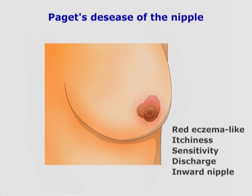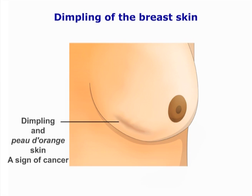This is caused by intraductal carcinoma. You may also ask the patient to lean forward so that you can assess both breasts visually for symmetry.